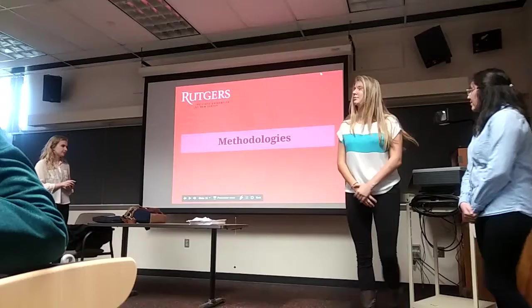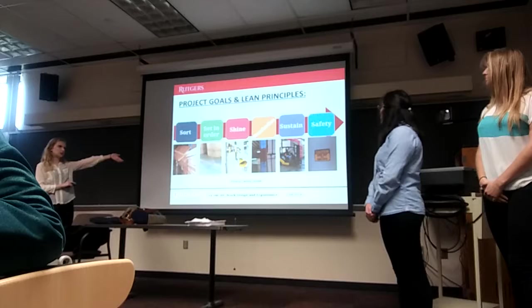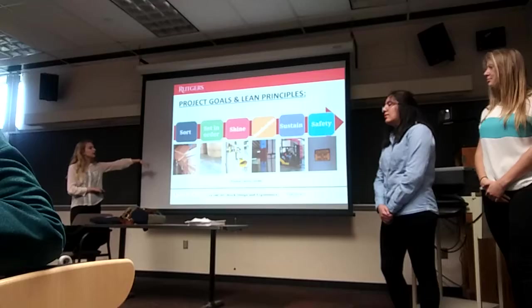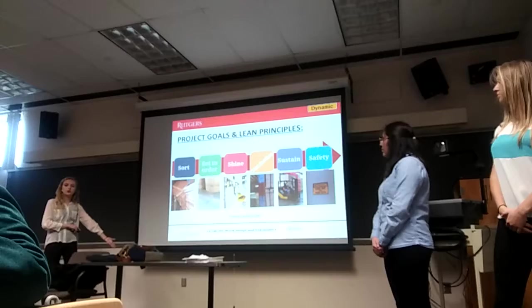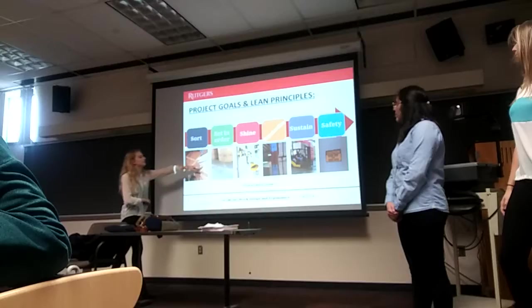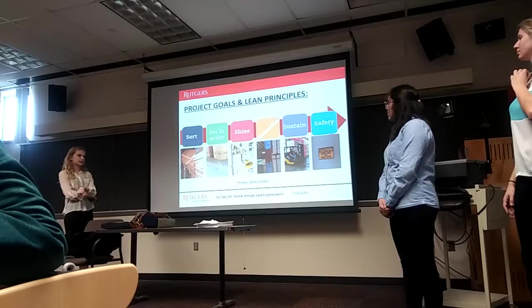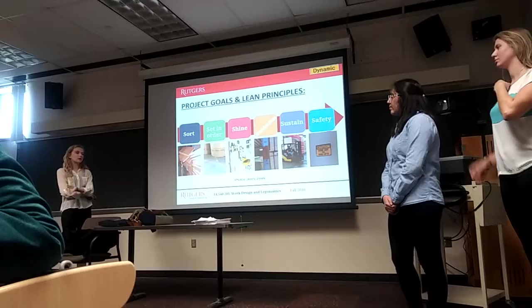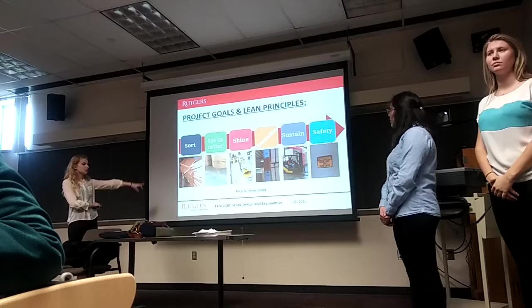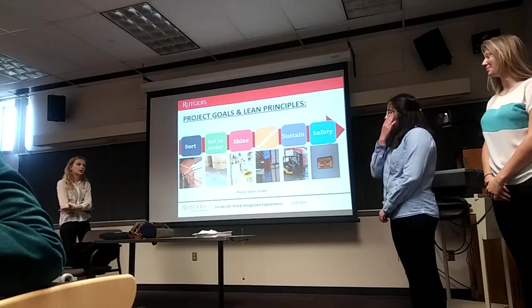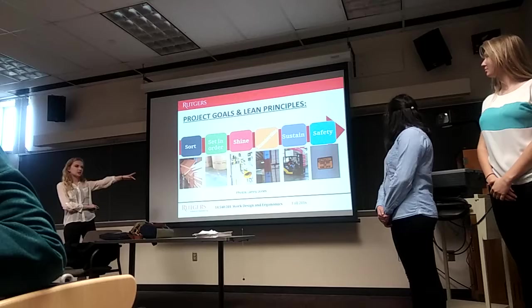Moving on to methodologies — we applied the five S's of lean and added an additional S for safety. Sort addresses excess dunnage found throughout the facility. Set in order addresses the faded safety aisle marking lines with product placed over them. Shine references the unsmashed dock light that could be used if a bulb were installed, bringing the company to a new standard. Standardize involves aisle markings similar to floor markings. Sustain relates to workers keeping up with improvements. Safety addresses the safety signage observed.